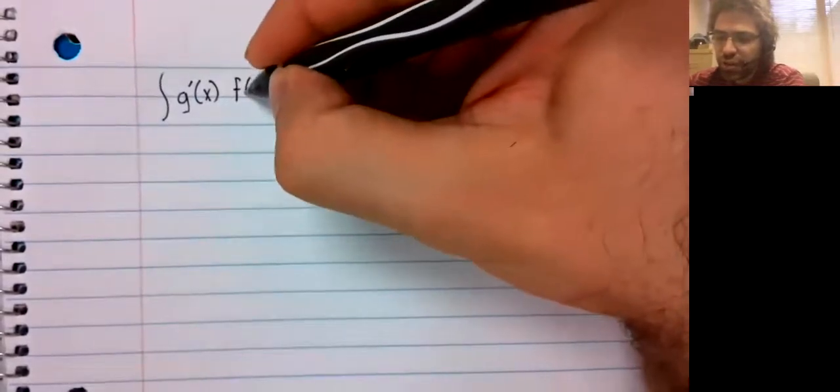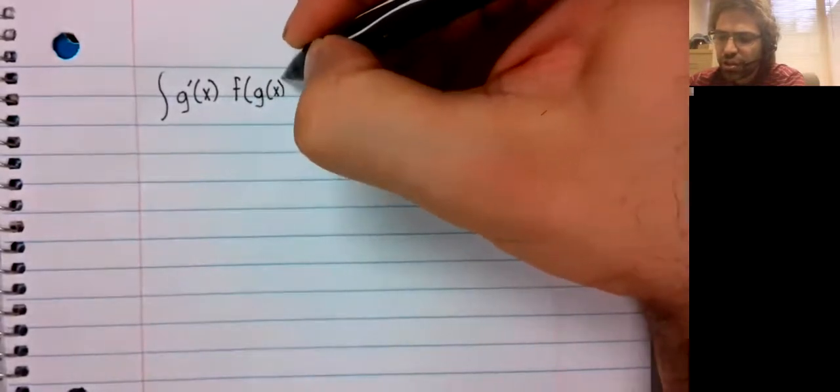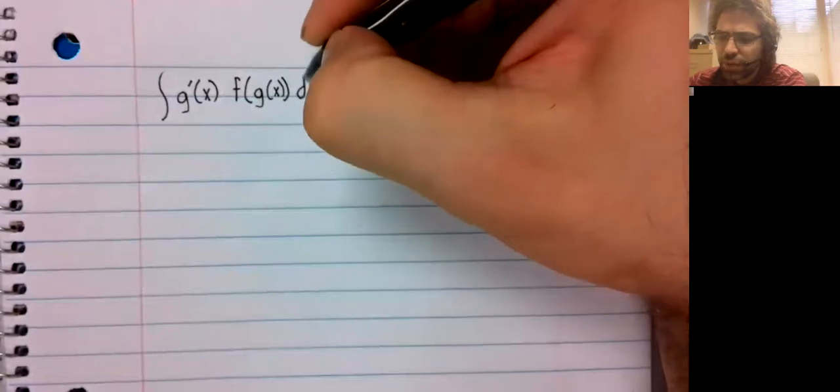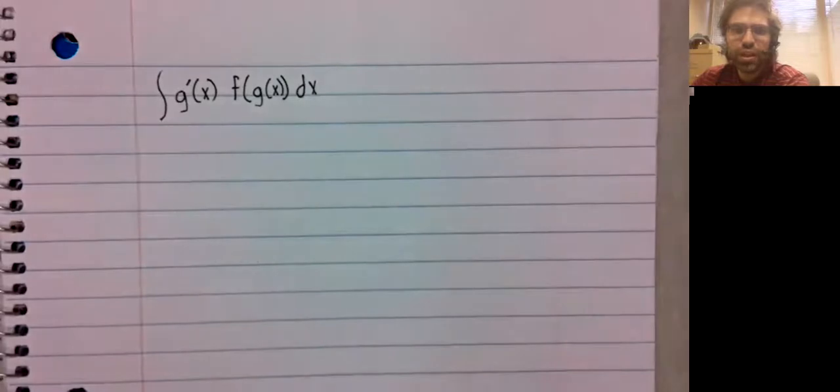U-substitution is quite a particular method. Either you can use it or you can't. And to use it, you need the derivative of the inside function to be hanging out over here.